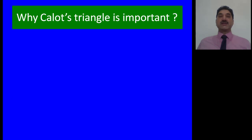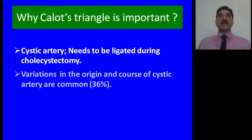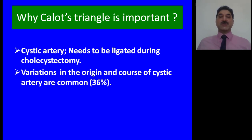Why is Calot's triangle surgically important? Calot's triangle is surgically important because the cystic artery, which needs to be ligated during cholecystectomy, usually lies within the Calot's triangle. Variations in the origin and course of the cystic artery are very common — they are present in 36% of individuals.